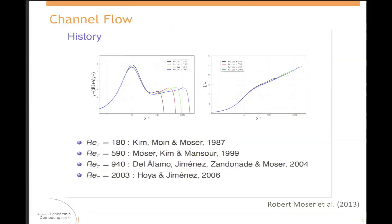Moving forward, we decided to take this experience and apply it to channel flow. Channel flow simulations have a rich history, starting with the initial computations of Kim, Moser, and Moin at Stanford in 1987, with an initial RE tau of 180, which was state of the art then. Moving to 2006, Jimenez and his team achieved an RE tau of over 2,000. Currently Bob is still processing his results, but my understanding is that he has achieved an RE tau in excess of 5,000.